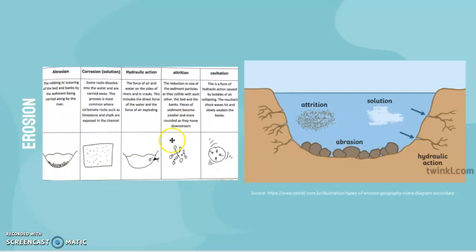Abrasion is the rubbing of the bed and banks by the sediment being carried along by the river. Then we have corrosion, also known as solution, which is how some rocks dissolve into the water and are carried away. It's most common for carbonate rocks, limestone, and chalk, which are more soluble.